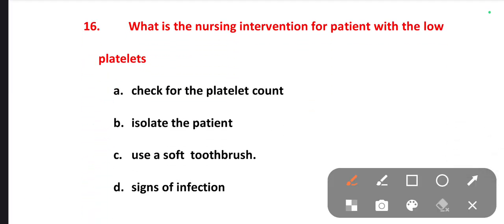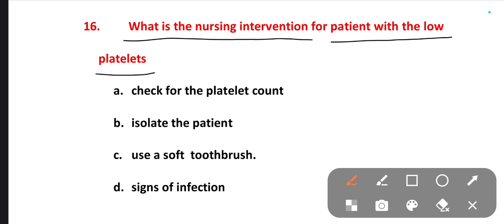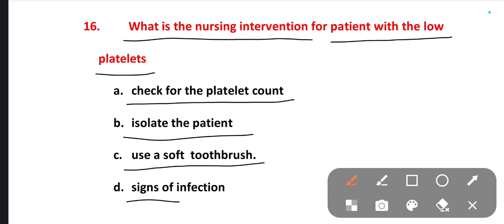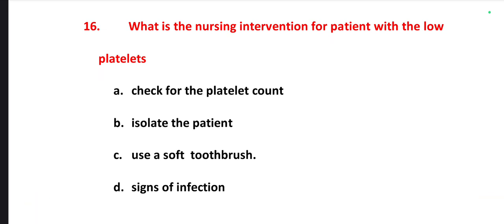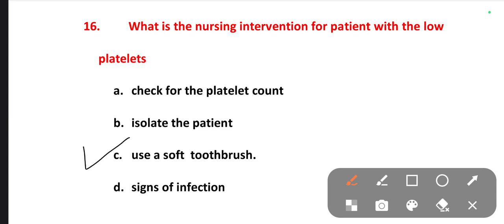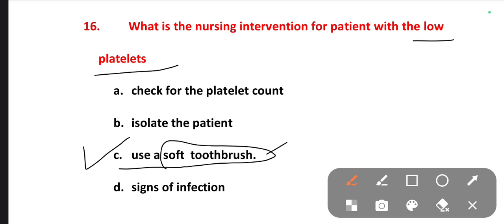The next one is: what is the nursing intervention for a patient with low platelets? Options are check for platelet count, isolate the patient, use a soft toothbrush, signs of infection. The right one is option C — we need to advise the patient to use a soft toothbrush, because if they use a hard toothbrush it can cause gum bleeding.